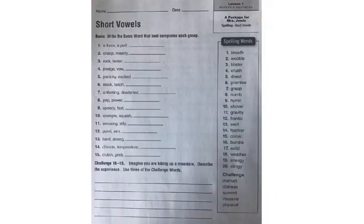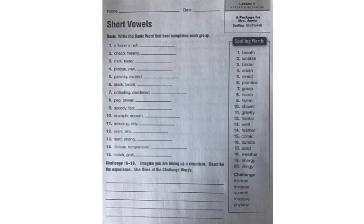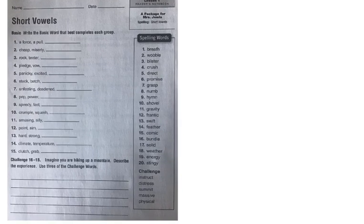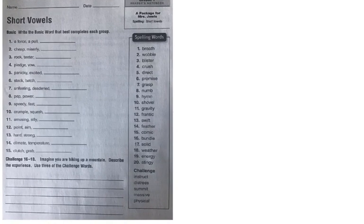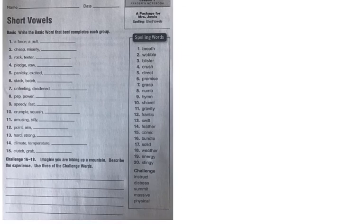You can pause here and finish out four through ten, or go on with me as I move to short vowels. This week your words are: breath, wobble, blister, crush, direct, promise, grasp, numb, shovel, gravity, frantic, swift, feather, comic, bundle, solid, weather, energy, and stingy.